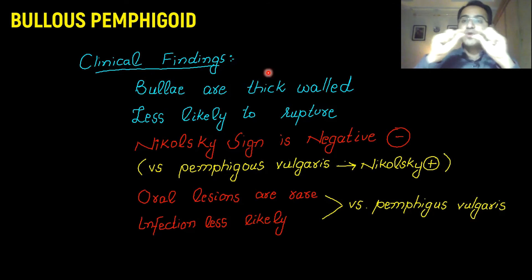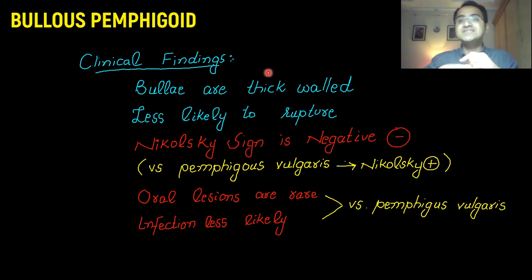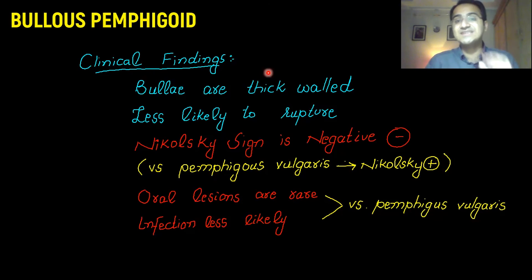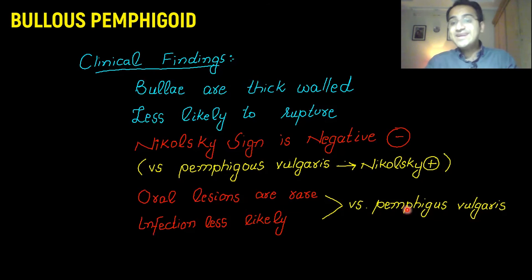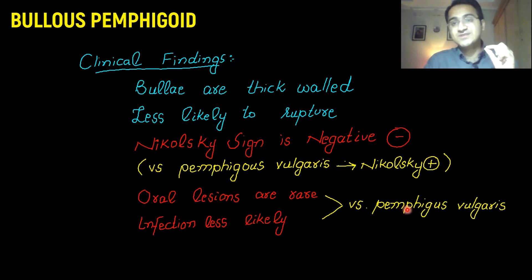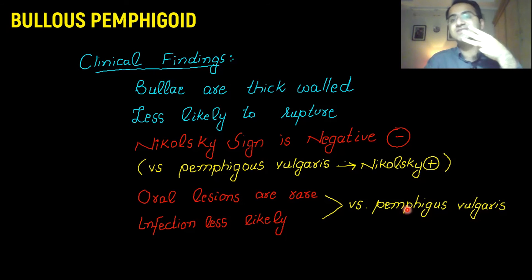Unlike pemphigus vulgaris, where the topmost layer is destroyed leading to weak blisters that rupture easily by touch, in bullous pemphigoid the blisters do not rupture with slight touch — they are thick-walled and Nikolski sign is negative. Oral lesions are also rare in bullous pemphigoid, unlike pemphigus vulgaris where oral lesions are very common.